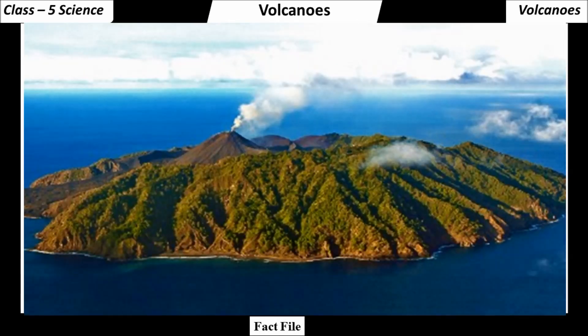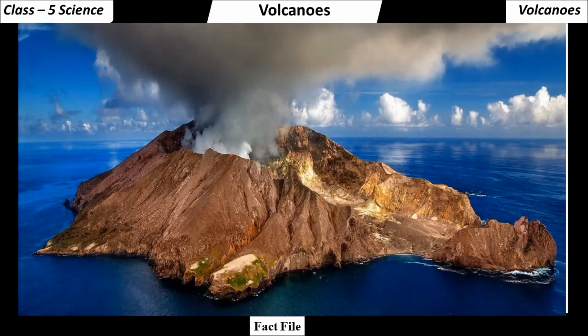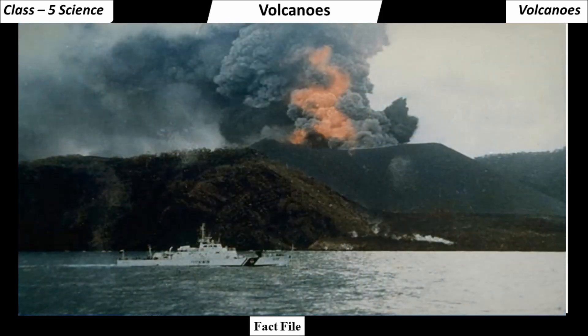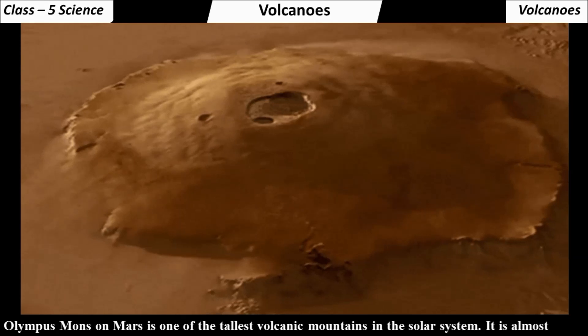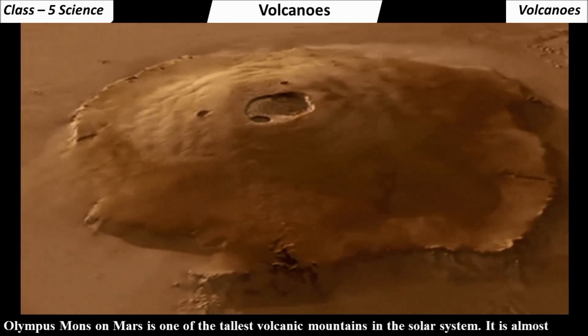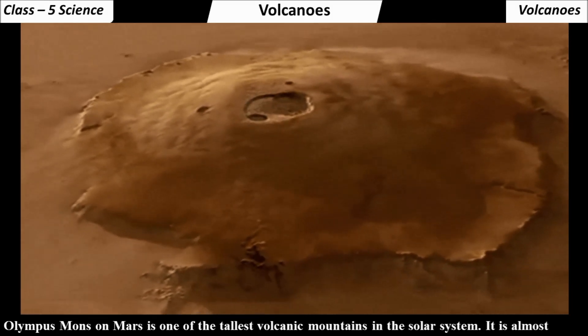Fact file: The Barren Island is an active volcano in the Andaman Islands. It is reported to have erupted first in 1787. The island has seen many eruptions since then. There are also volcanoes on other celestial bodies.